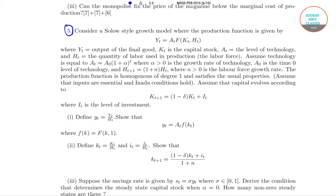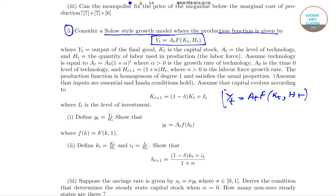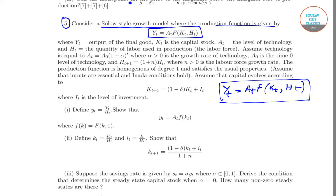As you can see in this question — this is question number 5 — we consider a Solow-style block model where the production function is given as yt = at · f(at, ht). The technology is given as at = a0 · (1 + α)^t.